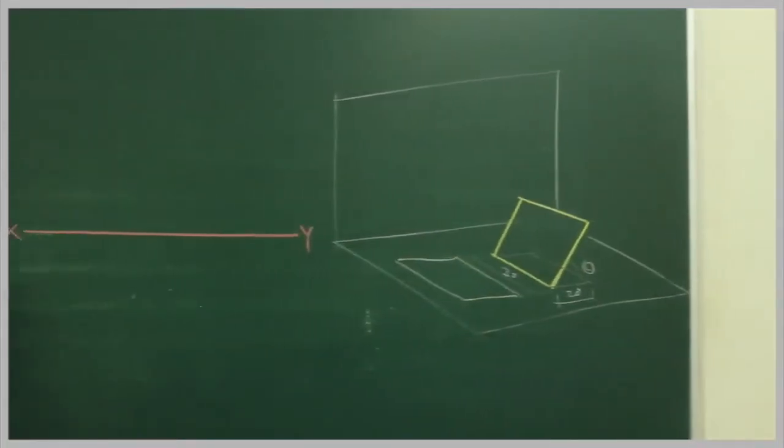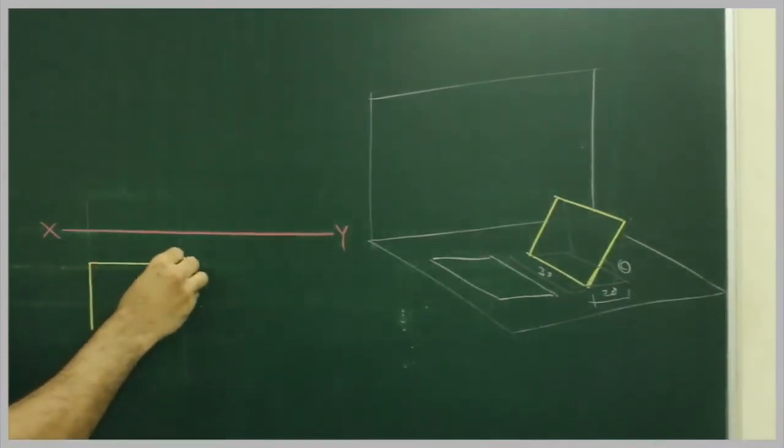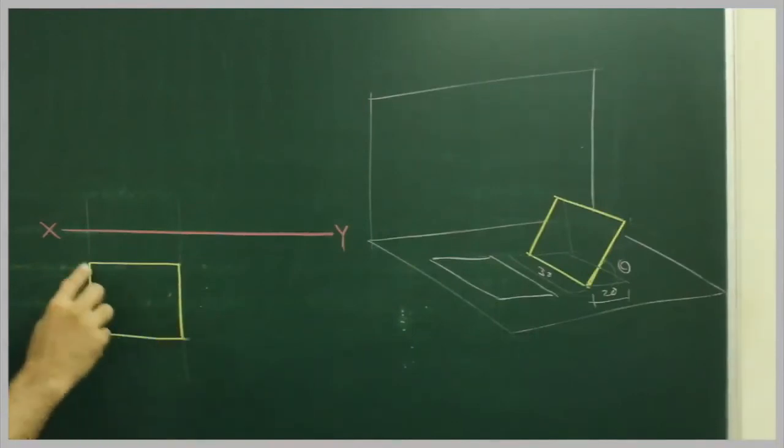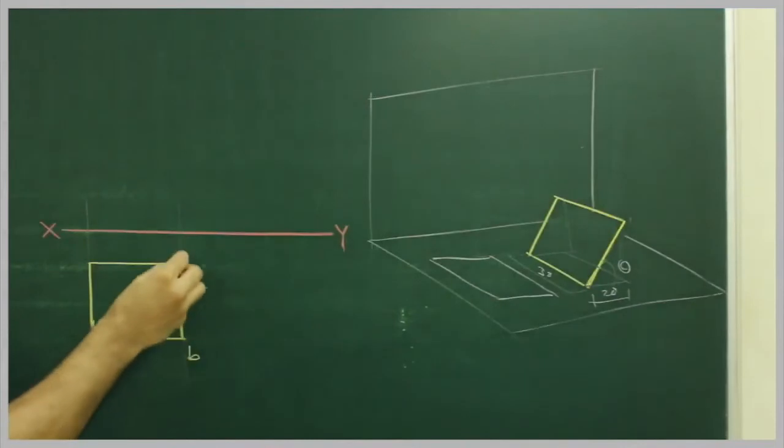First draw a square with one of its sides on left-hand side. See this, this side is on left-hand side, this is ABCD.